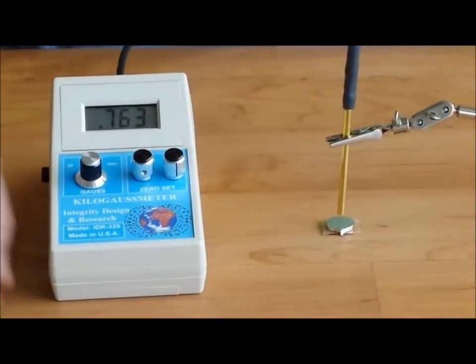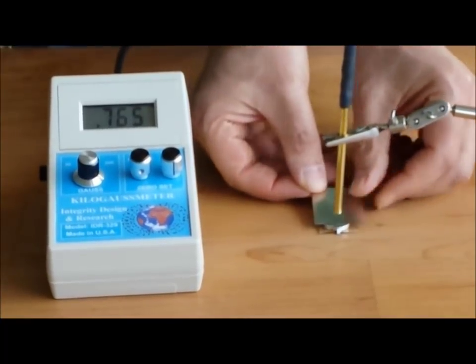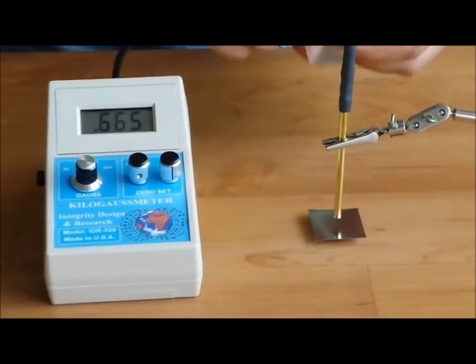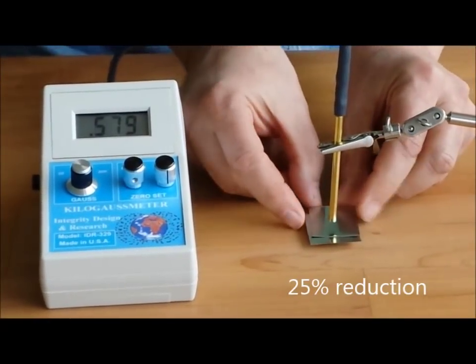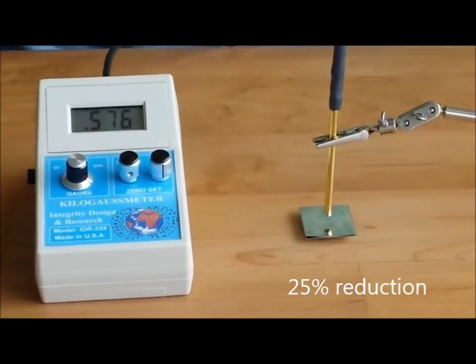Now let's do the same experiment with magnet shield. I'm going to start with a small piece. One small piece drops the field to 665 Gauss. Adding a second layer takes us to 570 Gauss.